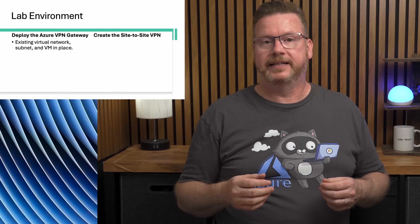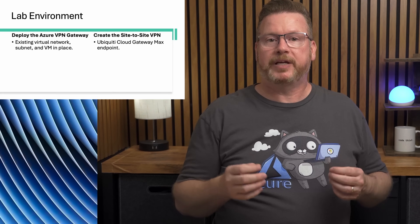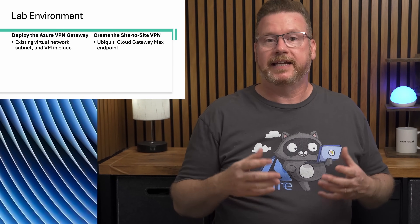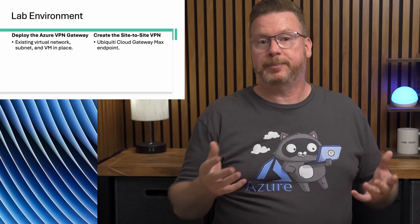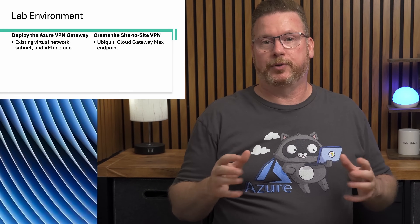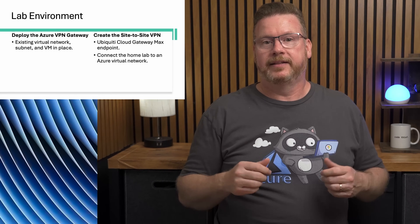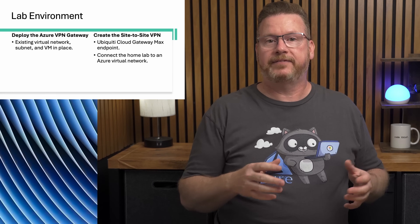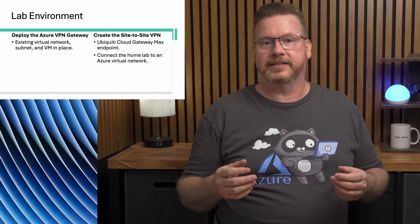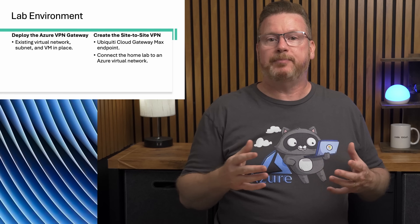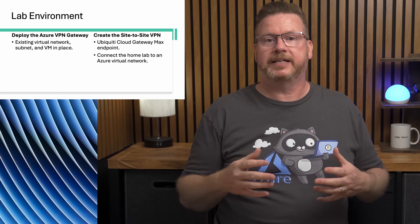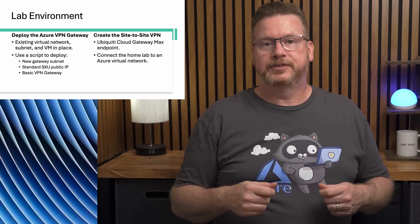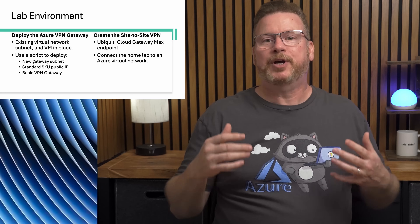On the Azure side, the demo starts with a virtual network, a subnet, and a virtual machine to test connectivity. On the home side, my Ubiquity Cloud Gateway Max is on a shelf in the basement. The cloud gateway supports two networks: one for lab traffic and one for family internet access. The lab network is completely isolated because the family is not too happy when I mess with their internet access.